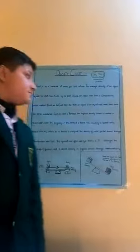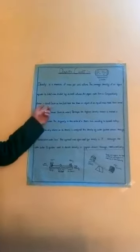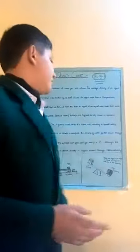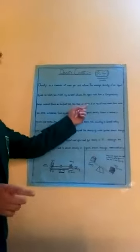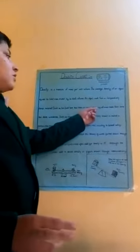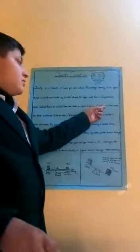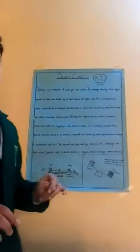An object made from a denser material such as iron will have less volume than an object of equal mass made from a less dense substance such as water. When we take iron and water together, we see their volume is the same but iron is heavier than water. This means water has less density than iron.